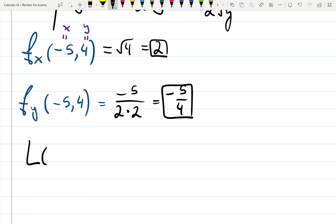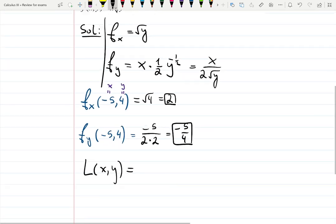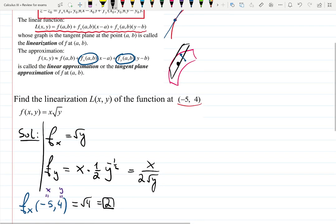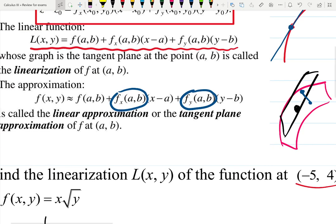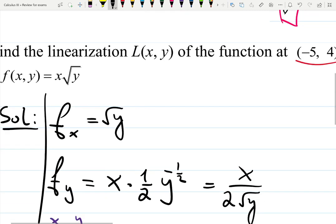Linearization L(x, y) is - this is the formula we showed you before. Linearization L is f at (a, b) plus the derivative with respect to x at (a, b) times (x - a), plus the derivative with respect to y at (a, b) times (y - b).